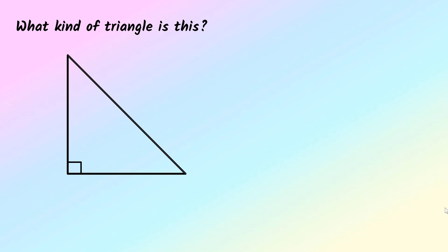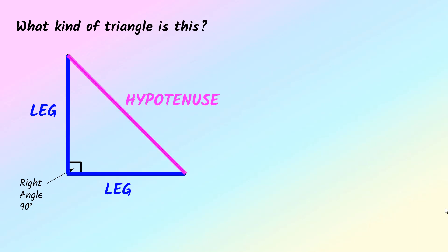What kind of triangle is this? Well, I noticed there's a right angle, which means this is a right triangle. A right triangle has three sides and two of them are classified as legs. This is a leg and this is a leg. The legs are the sides that make up the right angle. The third side is known as the hypotenuse. The hypotenuse is always the side across from the right angle — it does not touch the right angle.